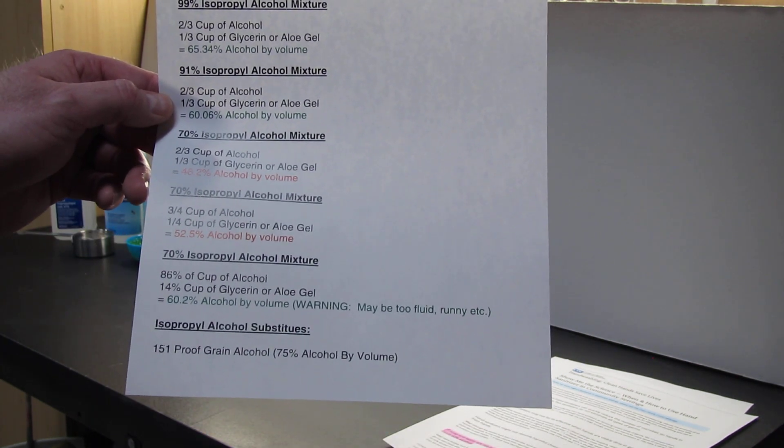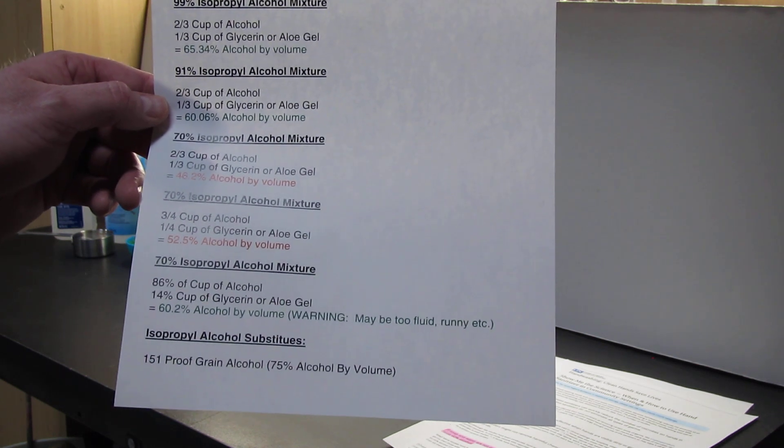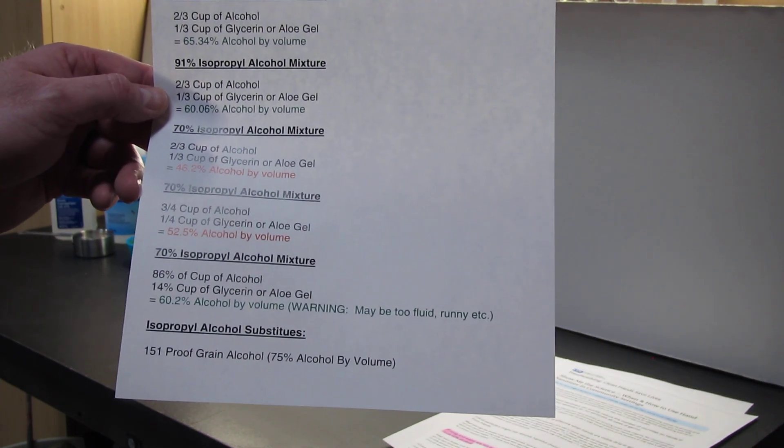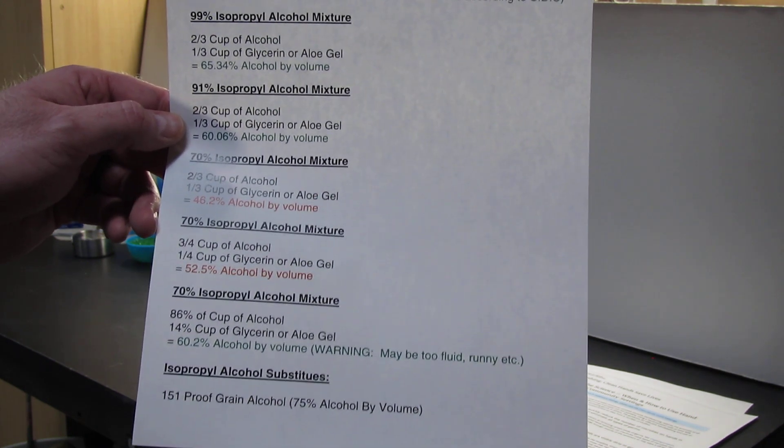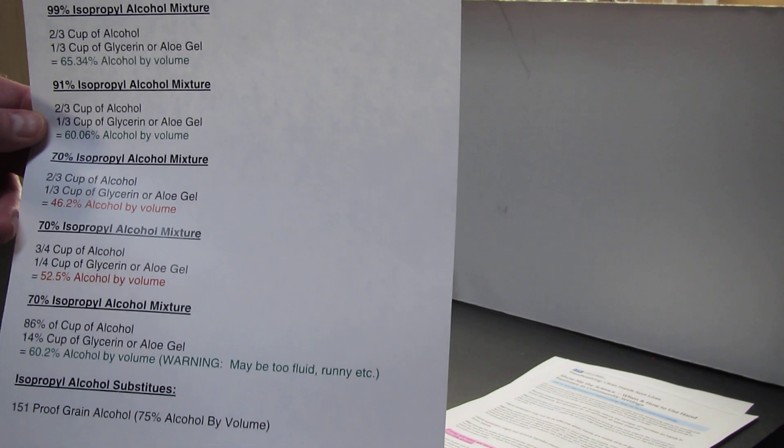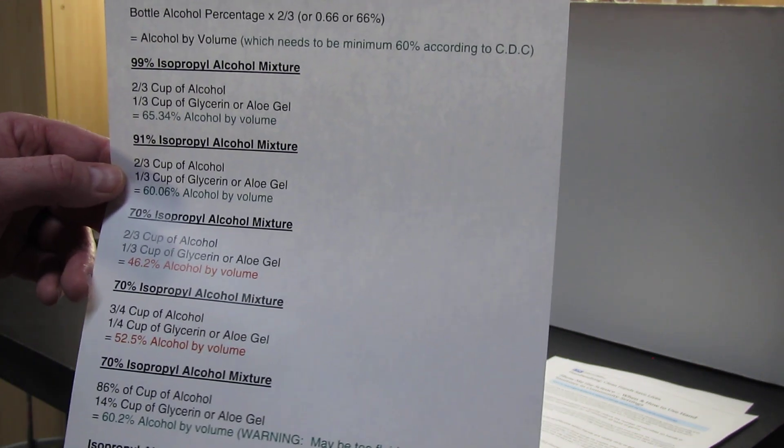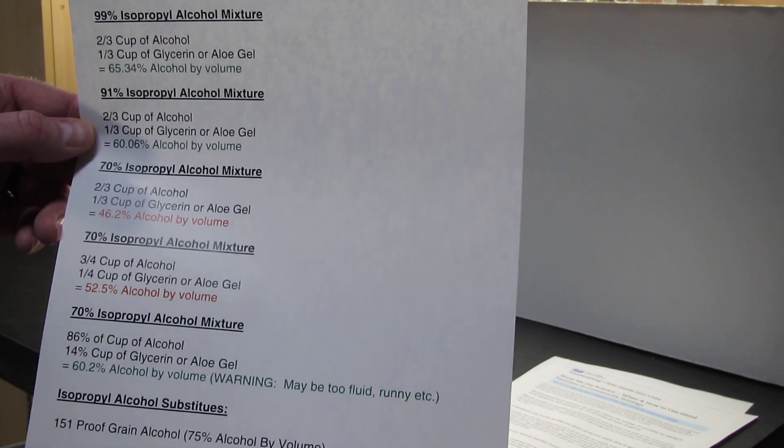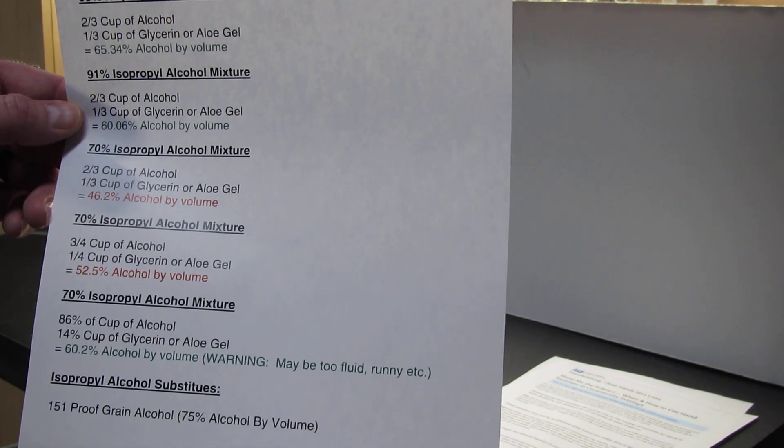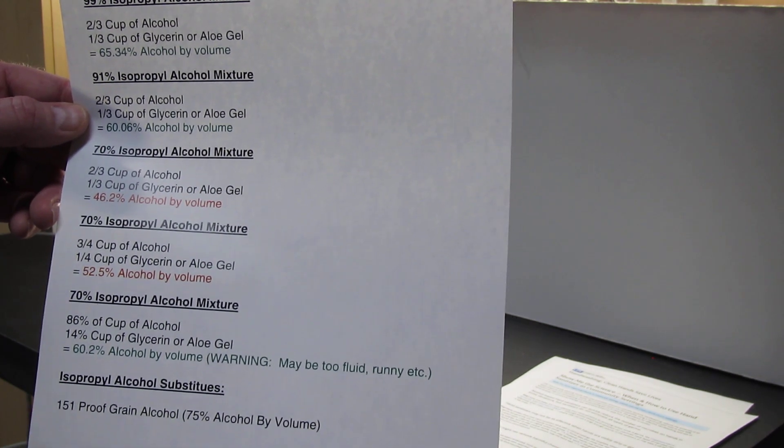If we were to go instead with 91% isopropyl alcohol, two-thirds of a cup of it and a third of a cup of glycerin or aloe gel, we end up with 60.06%. So as you can see by the CDC and their requirements, you need a minimum of that 60%. So if you're going to use a third of a cup and two-thirds of a cup as your ratios, the absolute minimum is 91% isopropyl alcohol.